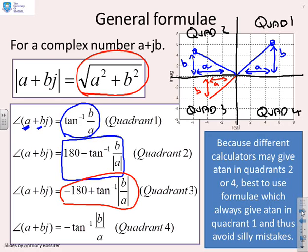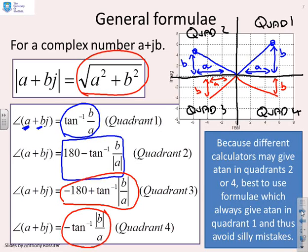In quadrant 4, b is negative and a is positive. Use the formula: minus tan⁻¹(|b| over a). Some calculators give inverse tan of a negative number in quadrant 4, others give it in quadrant 2, so you could make a silly mistake. The recommendation is always to use the inverse tan with positive numbers only and rely on your understanding of the geometry.